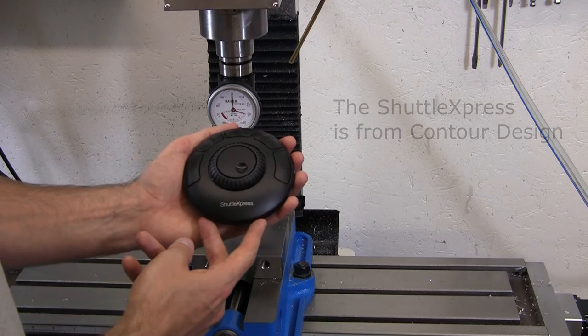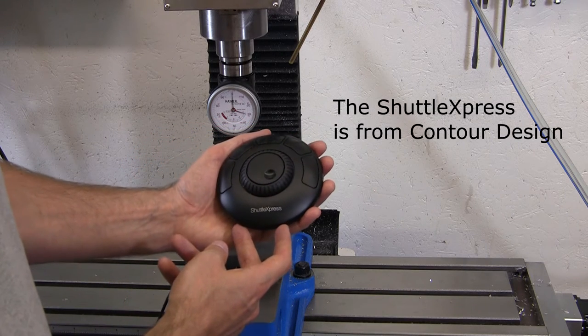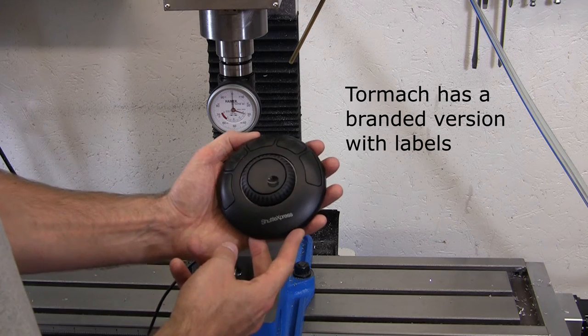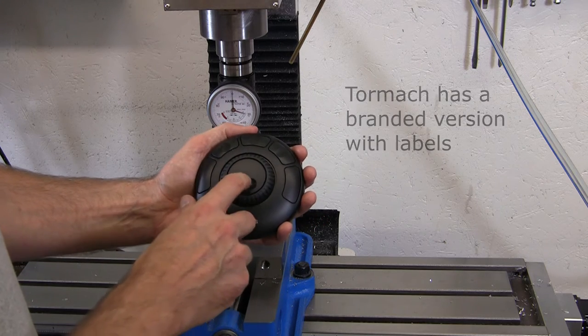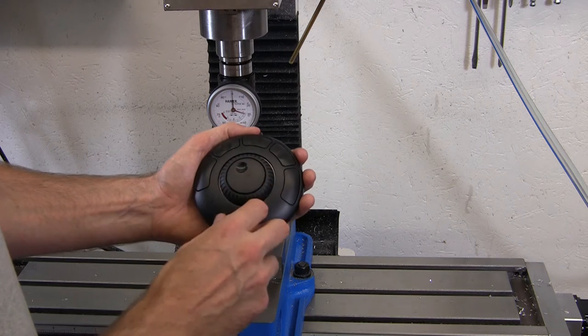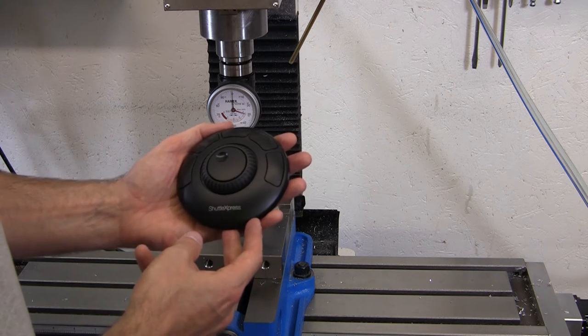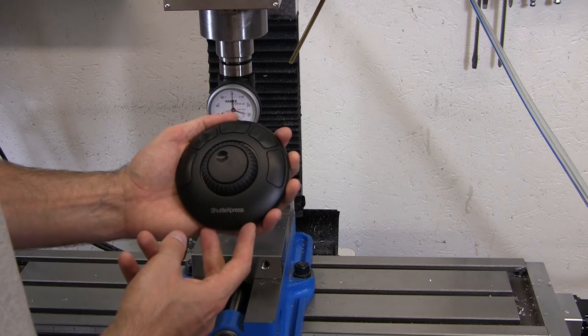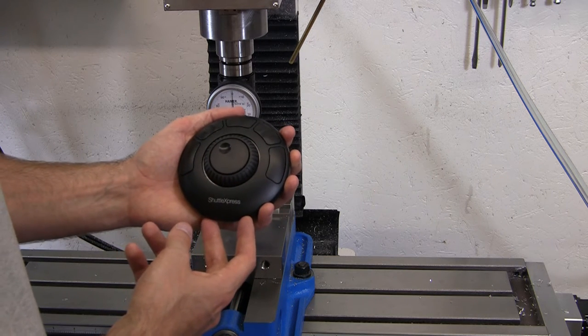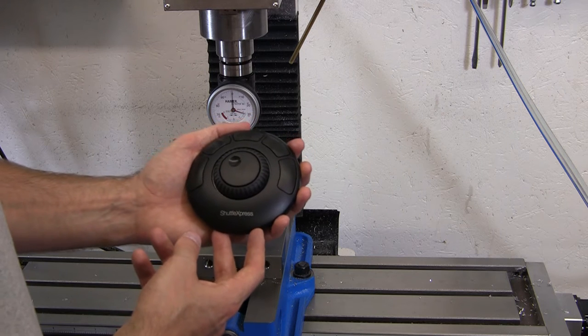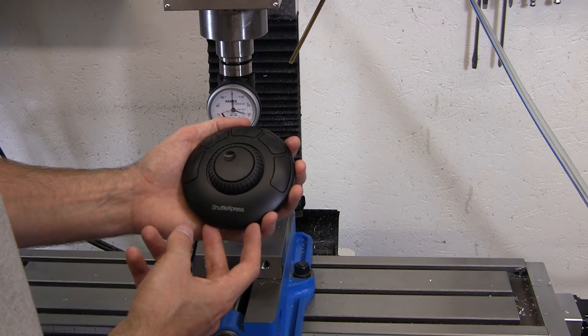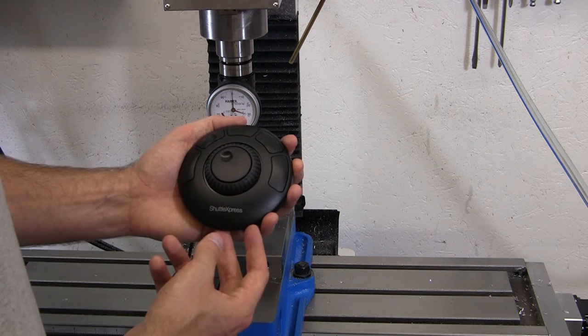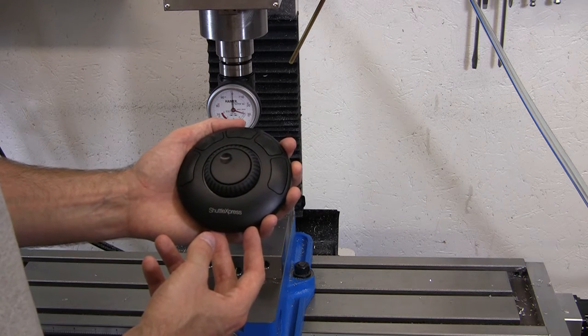The next controller we'll look at is from Shuttle Express. This is normally used for video editing, but it has some features that make it nice for CNC machines. It has five buttons on the outside and two wheels in the center. Linux CNC has some support for the Shuttle Express built-in, but in version 2.7.4, I wasn't able to get it to work very well out of the box. I downloaded files from MachineKit and added those into my Linux CNC installation.